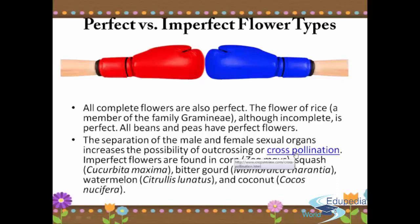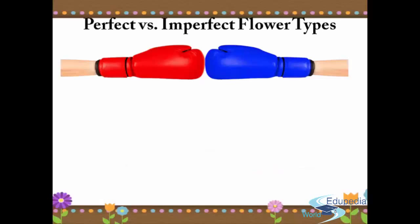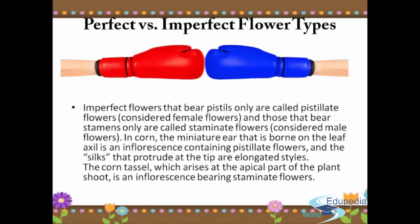The separation of the male and female sexual organs increases the possibility of out-crossing or cross-pollination, which will be discussed in the following video. Imperfect flowers are found in corn, squash (Cucurbita maxima), bitter gourd (Momordica charantia), watermelon (Citrullus lunatus), and coconut (Cocos nucifera). Imperfect flowers that bear pistils only are called pistillate flowers, considered female flowers, and those that bear stamens only are called staminate flowers.